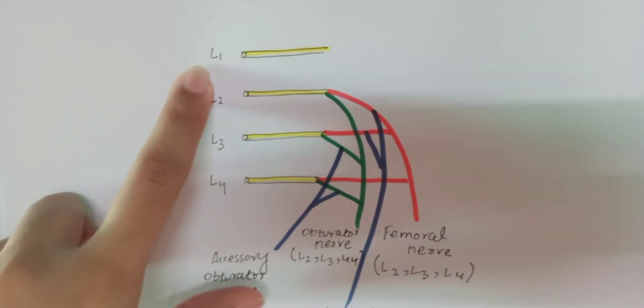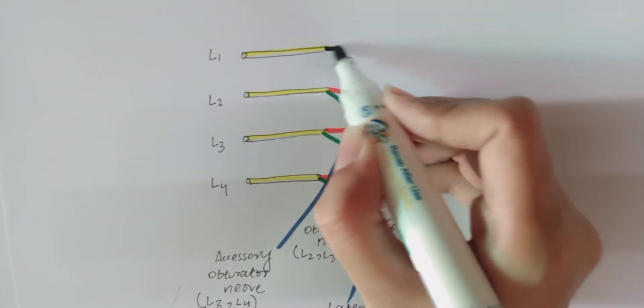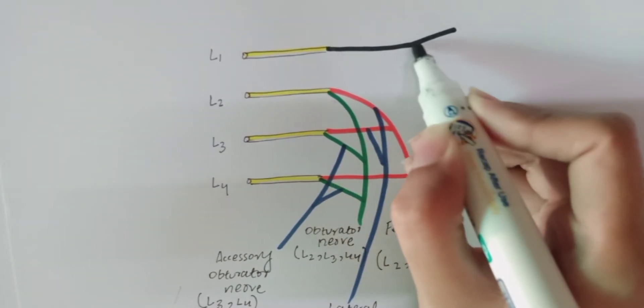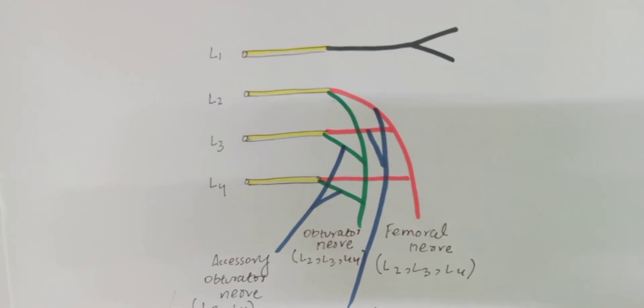L1 gives off two branches: the ilio-hypogastric nerve and the ilio-inguinal nerve.